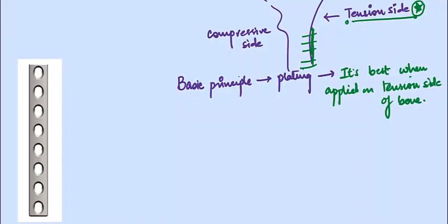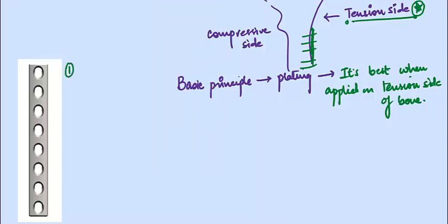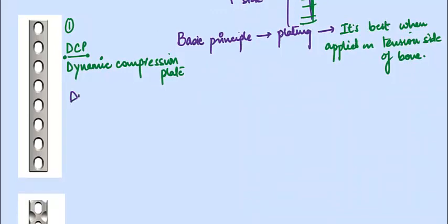Compression plates are best when applied on the tension side of the bone. In orthopedics we have two or three common types of plates. The first one — the first image — is what you call a DCP, a Dynamic Compression Plate. The holes in the plate are very smooth with no threads. This is the traditionally used plate.